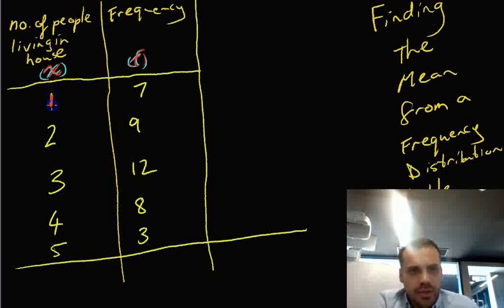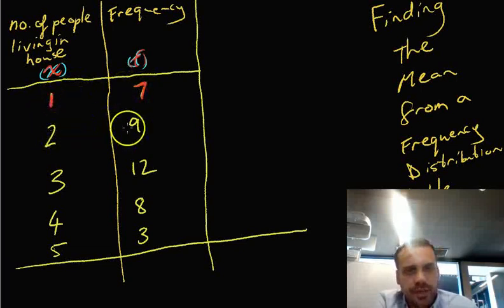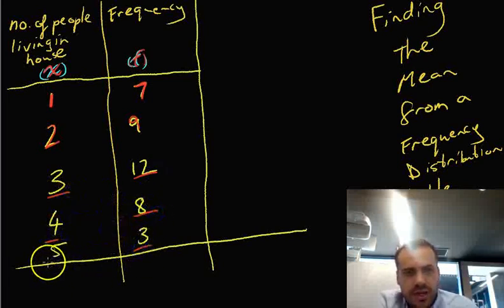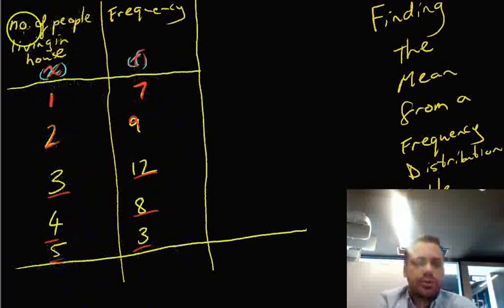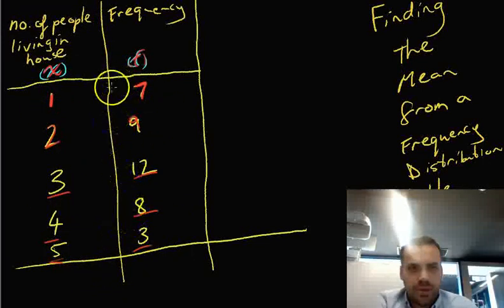So one person living by themselves, you can see that that's seven houses. Seven houses have one person in them. Nine houses have two people in them. Twelve houses have three people in them. Eight houses have four people in them, and three houses have five people in them. So this is how a frequency distribution table works. Pretty straightforward here.